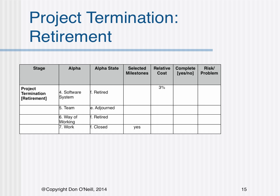Project termination entails the software system being retired, team adjourned, way of working retired, and work closed. The critical selected milestone revolves around work closed.